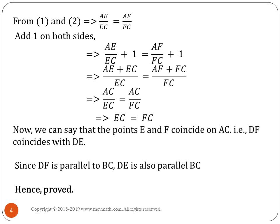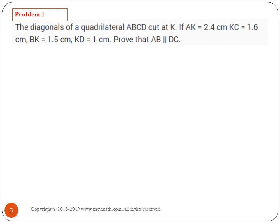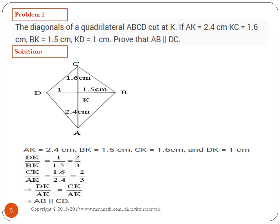Now we are going to solve one problem based on that. The diagonals of a quadrilateral ABCD cut at K. If AK equals 2.4 centimeter, KC equals 1.6 centimeter, BK equals 1.5 centimeter, and KD equals 1 centimeter, prove that AB is parallel to DC. For the solution we need to draw the picture, which will look like this. You have to write everything which is given.